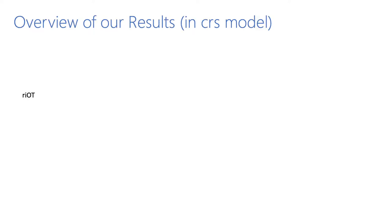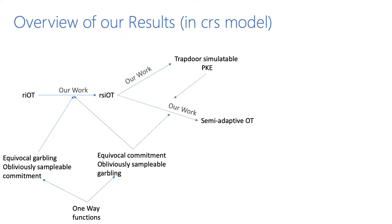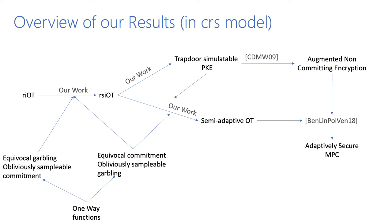Now we discuss our techniques in the CRS model, starting with RIOT. We show that RIOT with a few other primitives implies RSIOT. These primitives are equivocal and obliviously sampleable garbling, and an obliviously sampleable commitment scheme — all instantiable from one-way functions in the CRS model. Our work also shows that RSIOT suffices for trapdoor simulatable PKE in the CRS model. We then construct semi-adaptive OT from RSIOT, equivocal commitment scheme, obliviously sampleable garbling, and trapdoor simulatable PKE. Combined with the result of CDMW, we get non-committing encryption from trapdoor simulatable PKE, which can be obtained from RIOT. Finally, we apply the result of BLPV to get an adaptively secure MPC protocol from RIOT. We show that RIOT can be constructed from CDH, LPN, and group actions in the CRS model.